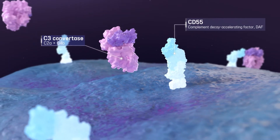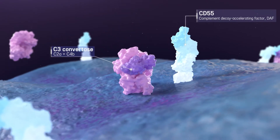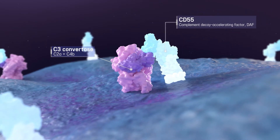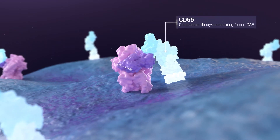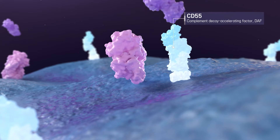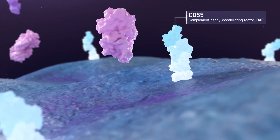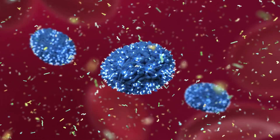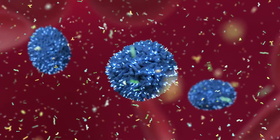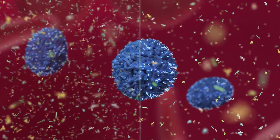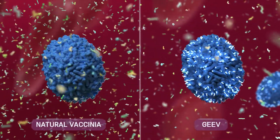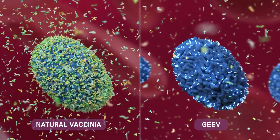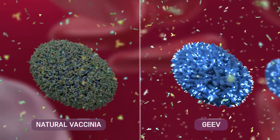CD55, also known as decay accelerating factor, is a potent inhibitor of the complement cascade that breaks down the C3-convertase. By abrogating the C3-convertase, the oncolytic vaccinia virus developed on this novel platform can survive longer in the bloodstream, as it is resistant to the complement response.